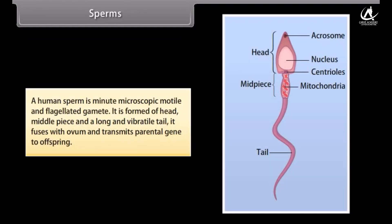A human sperm is a minute, microscopic, motile, and flagellated gamete. It is formed of a head, middle piece, and a long vibratile tail. It fuses with the ovum and transmits parental genes to offspring.